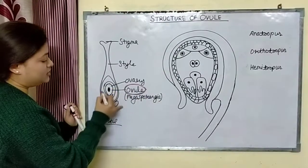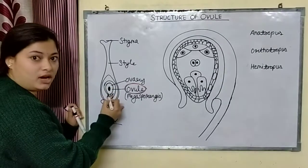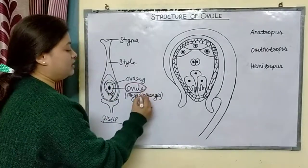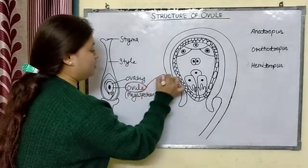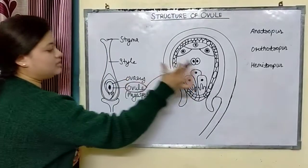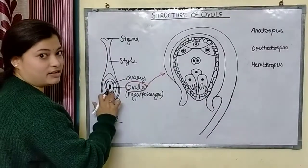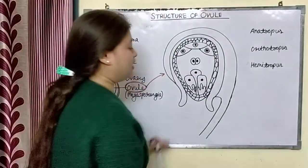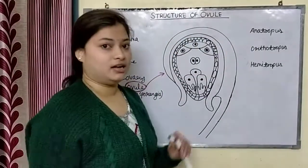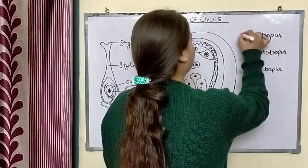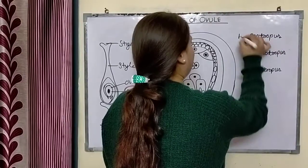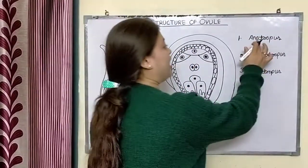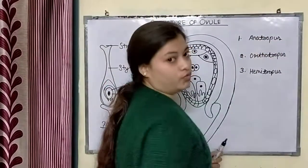This part of the pistil is called ovule, which relates to Megasporogenesis, and its structure is shown here. This enlarged diagram shows the detail of that part. Mostly, we have 3 types of ovules in plants. The first is Anatropos ovule.